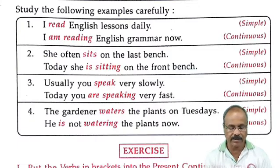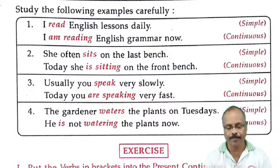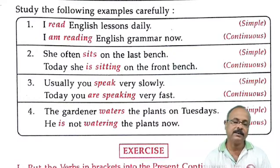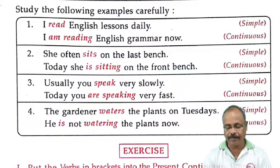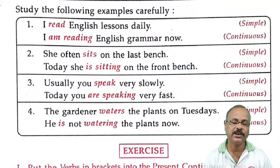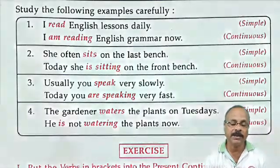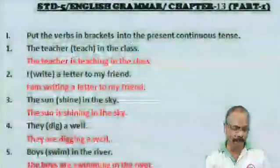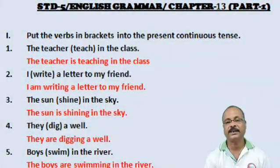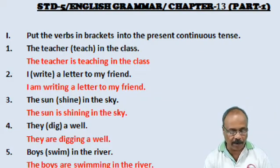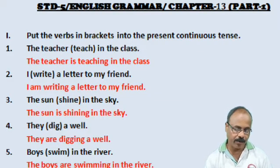'The gardener waters the plants on Tuesdays' — simple. 'He is not watering the plants now' — continuous. It will be easier to understand if we solve the exercises as well. Let us do the exercises. Part 1: Put the verbs in brackets into the Present Continuous Tense.